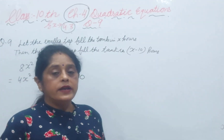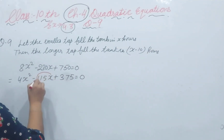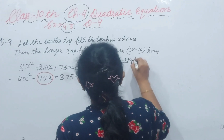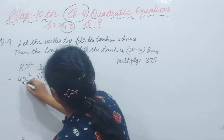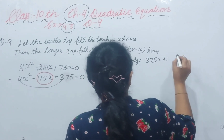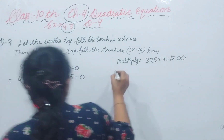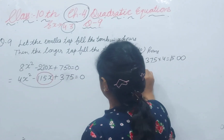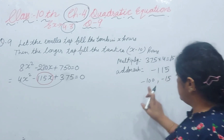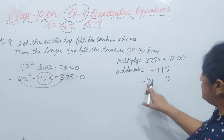We can solve this by quadratic formula or completing the square method, but I am using splitting the middle term. We need two numbers that multiply to give 4 times 375 equals 1500, and add to give minus 115. The pair is minus 100 and minus 15: multiply gives positive 1500, and add gives minus 115.